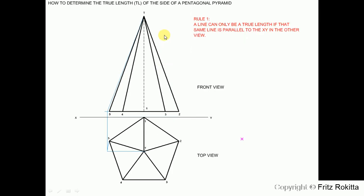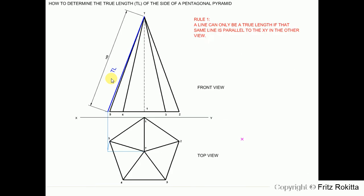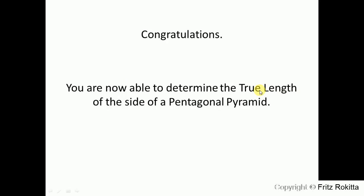The last step is to connect the tip of my front view to the intersection of the extended base. This now is my true length. I draw a solid line to indicate line 5T as a true length, and write in capital letters the abbreviation TL for true length. Congratulations! You are now able to determine the true length of the side of a pentagonal pyramid. Thank you.